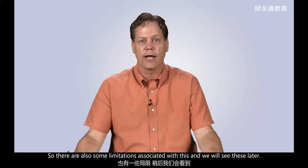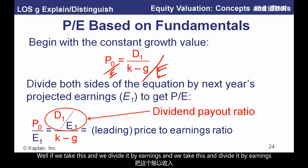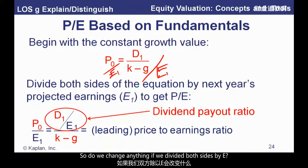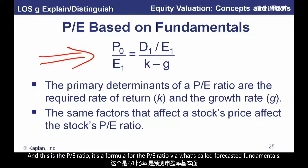Price to earnings based on fundamentals: if we start from the Gordon Growth Model — price today equals dividend at time one divided by K minus G — and we divide both sides by earnings, then gather terms, we get the leading P/E ratio formula. This is certainly something you'd want on your formula sheet. The P/E ratio via forecasted fundamentals is the leading dividend yield — dividends next year divided by earnings next year — over K minus G.